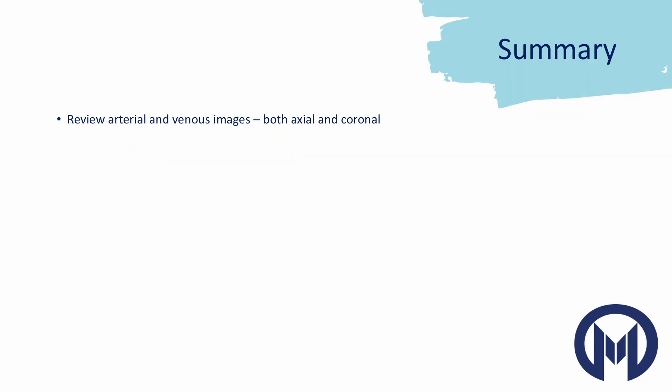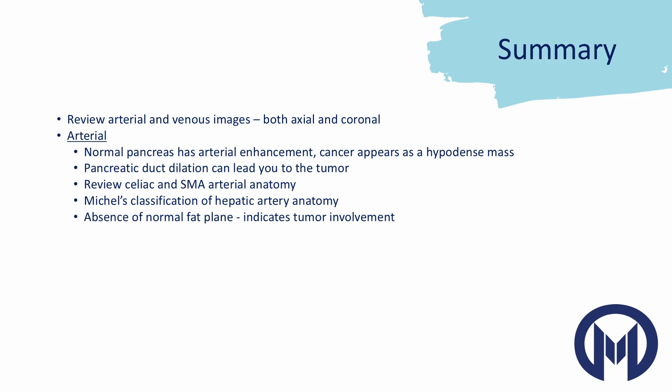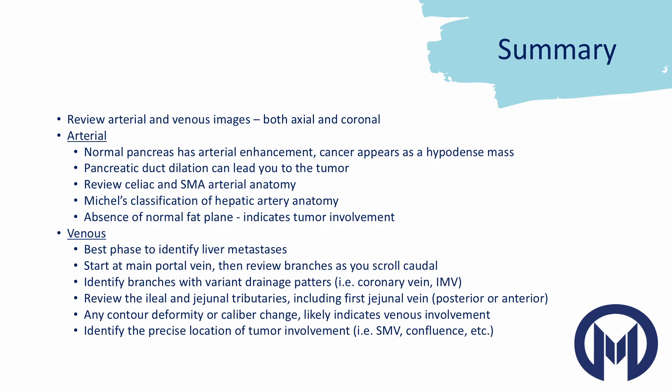Here's a summary and checklist. Review the arterial and venous images, both axial and coronal. On arterial phase, the normal pancreas enhances — that helps identify the mass. Use the pancreatic duct to help locate the tumor. Review the celiac and SMA; know Michels classification and pay attention to fat planes. On venous phase, it's the best phase to look for liver metastases. Start at the portal vein and move caudally to identify all branches. Know those with variant drainage patterns like the coronary vein and IMV. Review the ileal and jejunal tributaries. Identify the posterior jejunal vein and whether it's anterior or posterior. Any contour deformity typically indicates venous involvement.